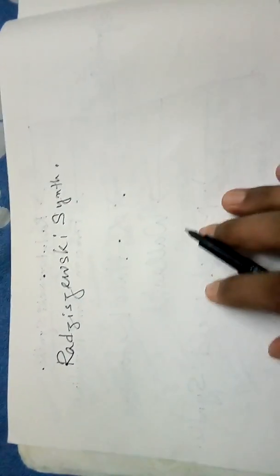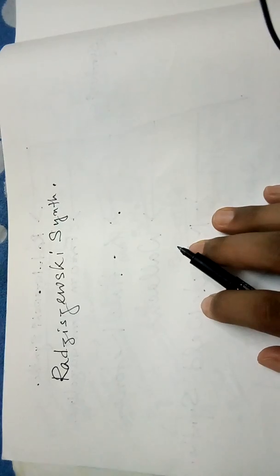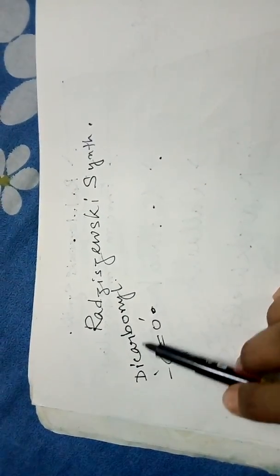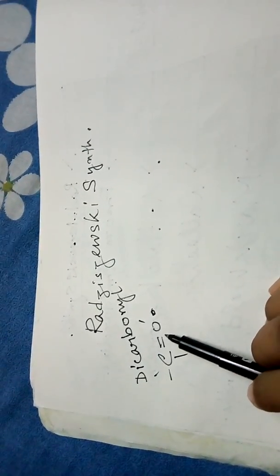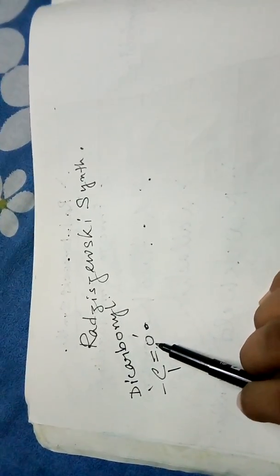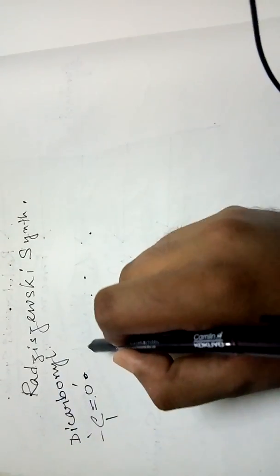Radziszewski synthesis involves the condensation of a dicarbonyl compound — such as glyoxal, which contains two carbonyl groups — with an aldehyde in the presence of ammonia.